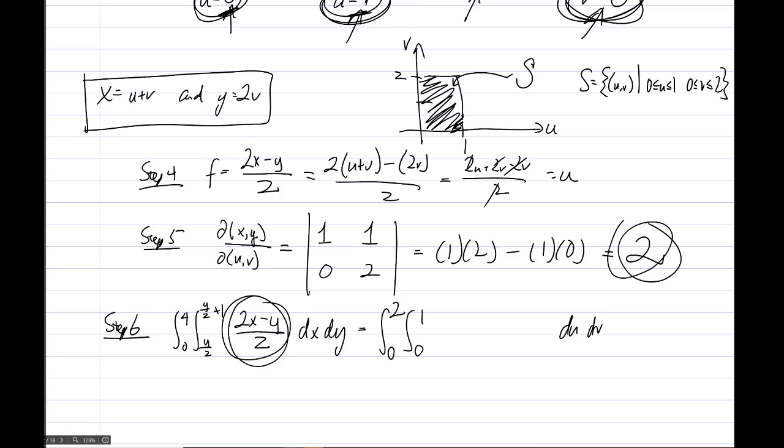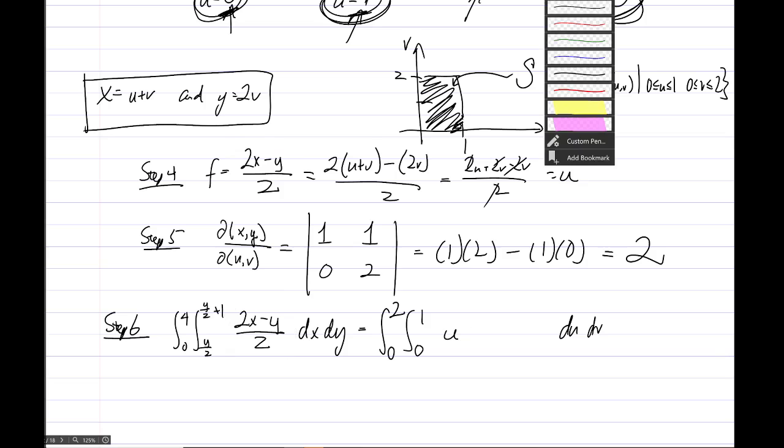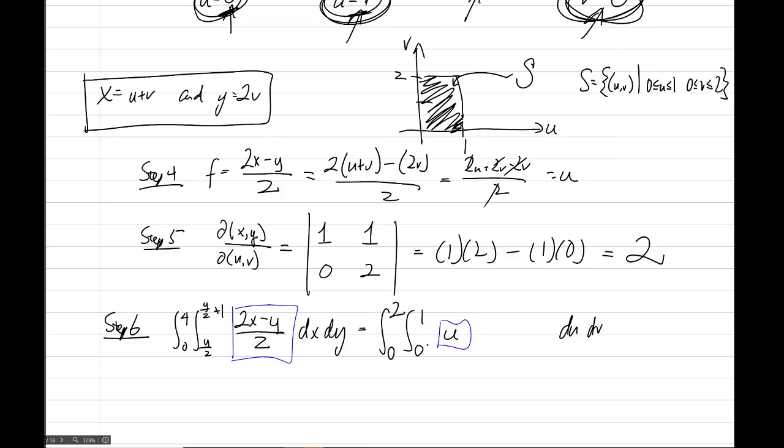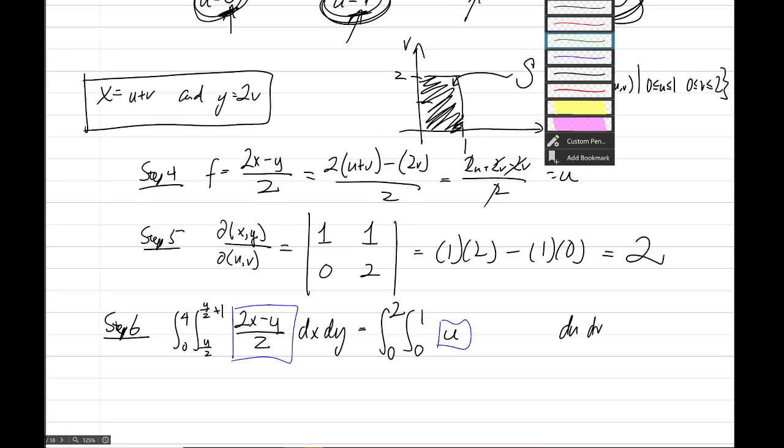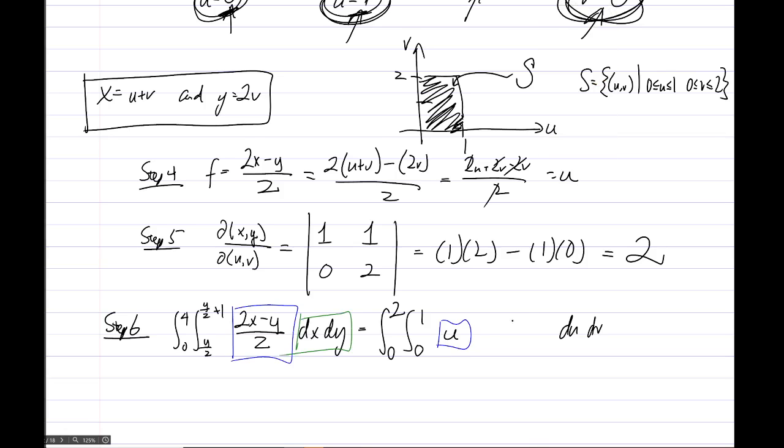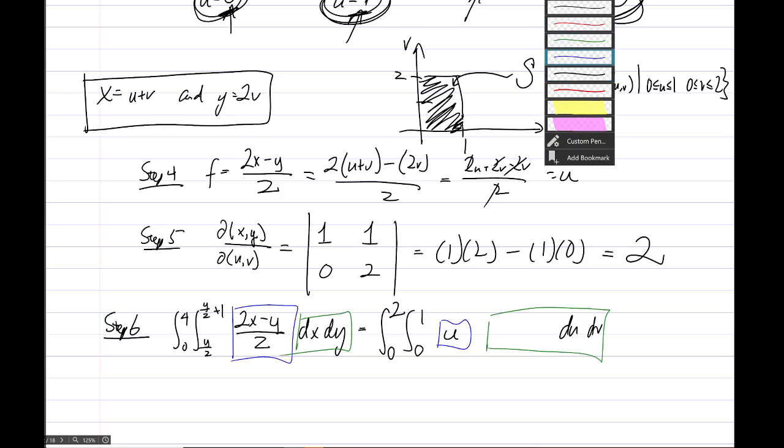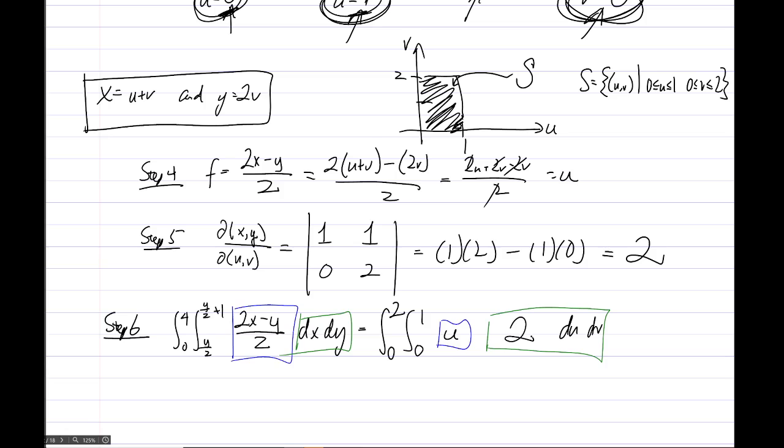Then finally, the function, we had, oh sorry, not there. The 2X minus Y turned into just a U, so we'll write that in place here. Maybe we will use colors to say that became that. And then DX, DY should become 2 times du, dv, the 2 here being copied from, I need another color, from right there. Yeah, recall that DX, DY becomes Jacobian times du, dv.